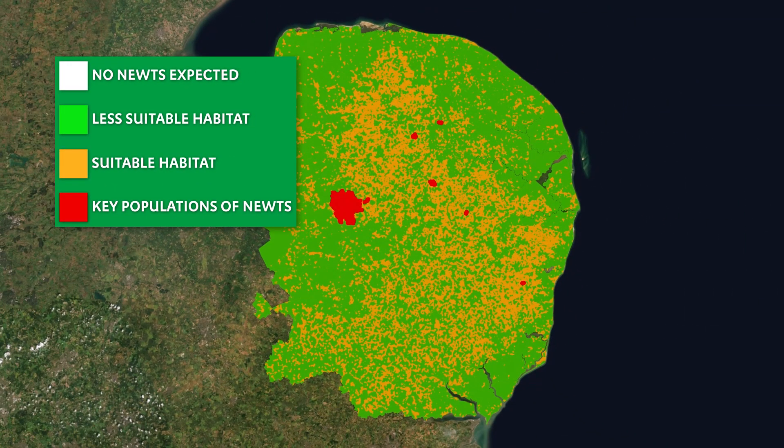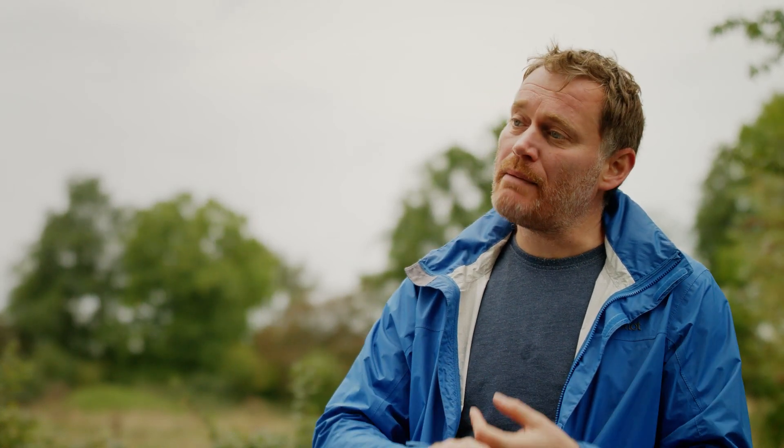Amber zones are where we do predict there to be suitable habitat for great crested newts. Then there are the red zones, which are specific areas where there are key populations. They may be internationally, nationally, or locally recognised, and they can be set up by stakeholders themselves to help with that process.